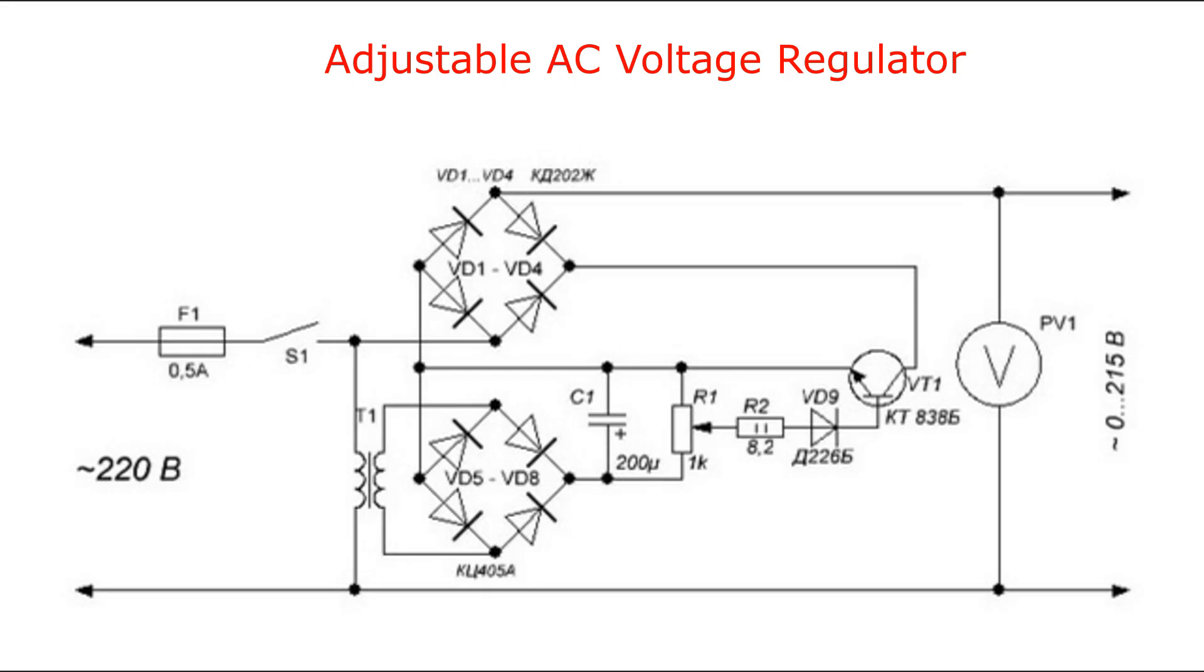This circuit is connected to a 220 VAC network via fuse F1 rated at 0.5 A, then toggle switch S1 is used and voltage is supplied to the transformer.